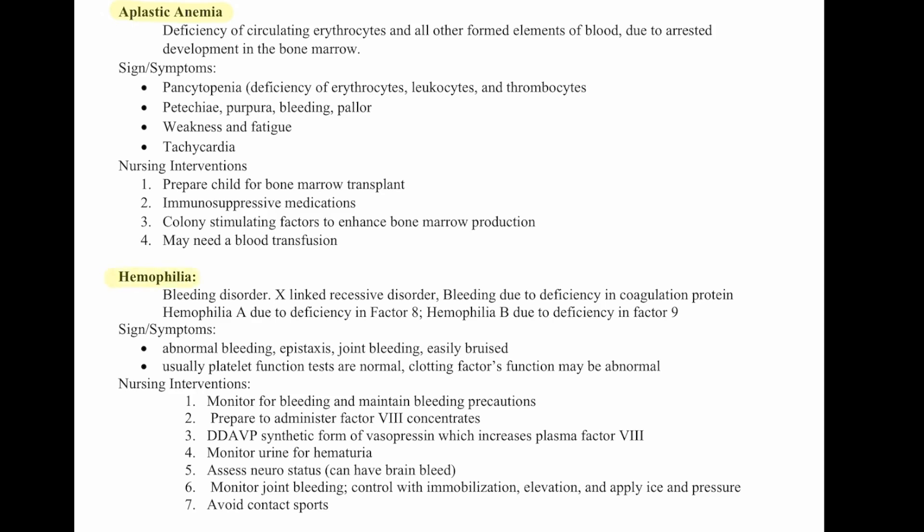Hemophilia is a blood disorder — an X-linked recessive disorder — involving bleeding due to a deficiency in coagulation factors. Hemophilia A is due to a deficiency in factor VIII, and hemophilia B is due to a deficiency in factor IX. Signs and symptoms include abnormal bleeding, epistaxis, joint bleeding, easy bruising, and usually normal platelet function tests, though clotting factor function may be abnormal. Nursing interventions: monitor for bleeding and maintain bleeding precautions. Prepare to administer factor VIII concentrates. DDAVP, a synthetic form of vasopressin, increases plasma factor VIII. Monitor urine for hematuria. Assess neurological status because they can bleed in the brain. Monitor joint bleeding and control with immobilization, elevation, and ice/compression. Avoid contact sports.